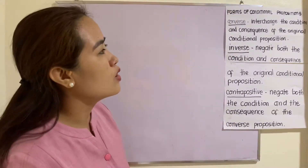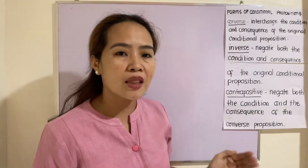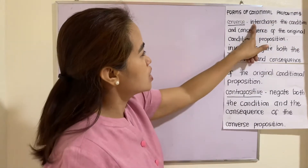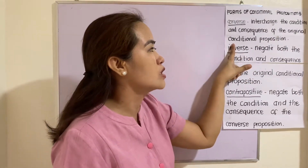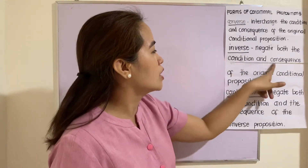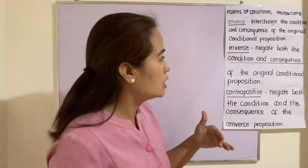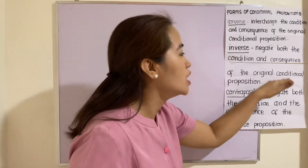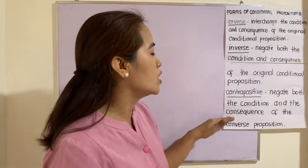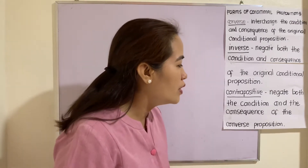These are now the forms of conditional propositions. The first one is the converse. To get the converse, you just interchange the condition and consequence of the original conditional proposition. For the inverse, negate both the condition and consequence of the original conditional proposition. And then for the contrapositive, negate both the condition and the consequence of the converse proposition.